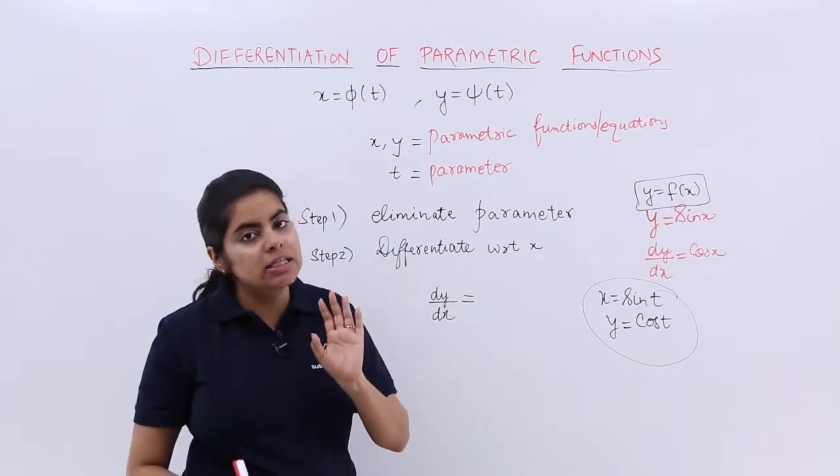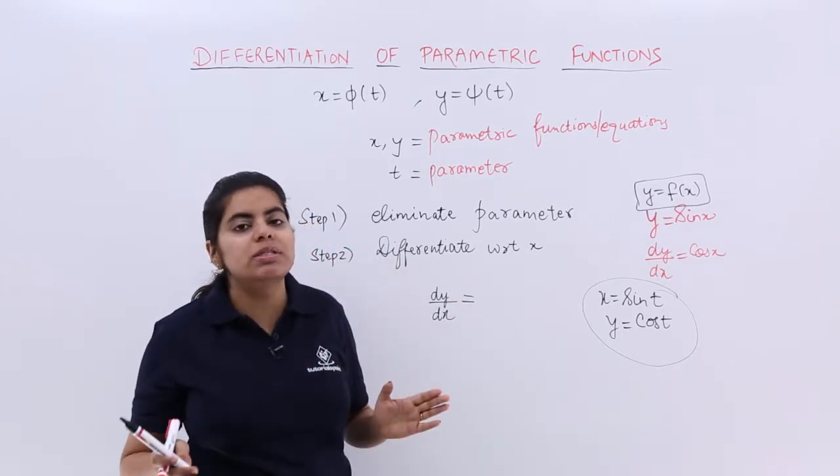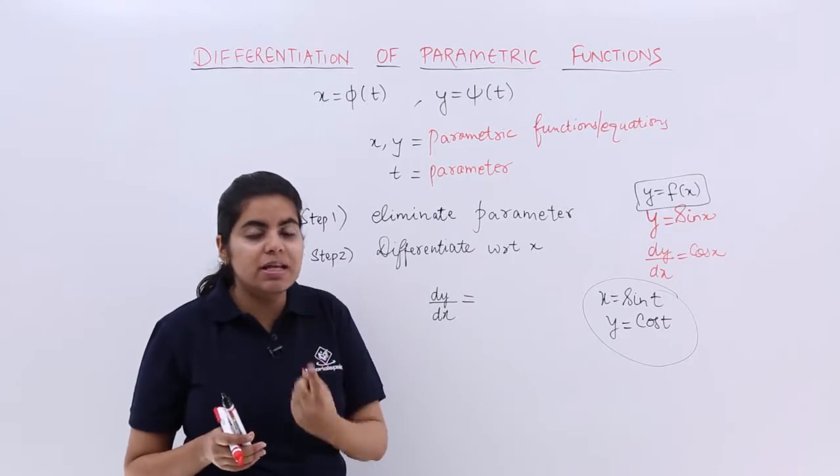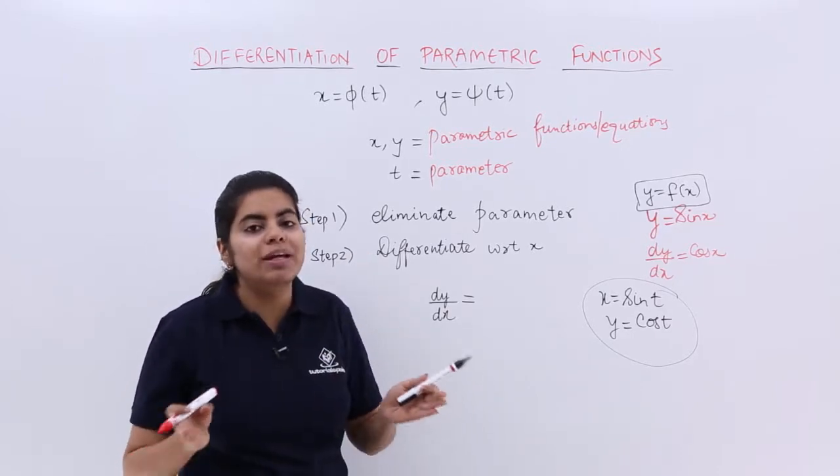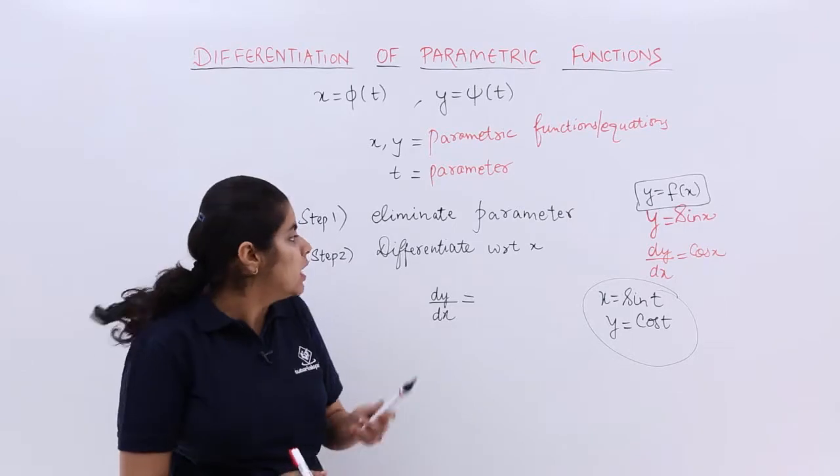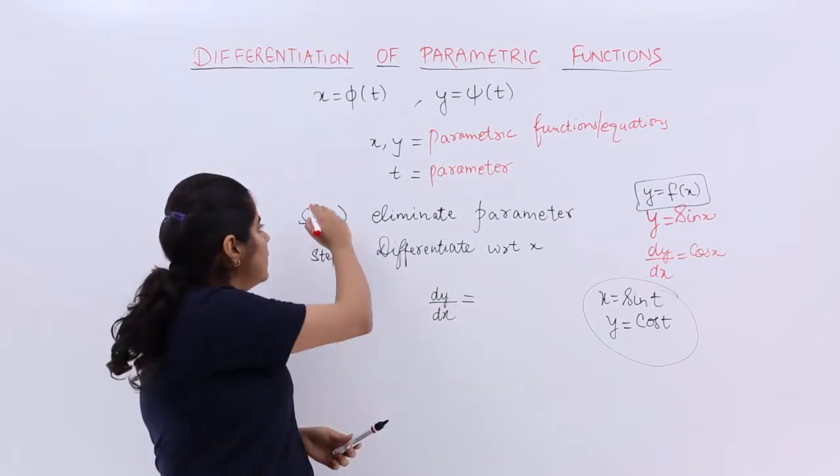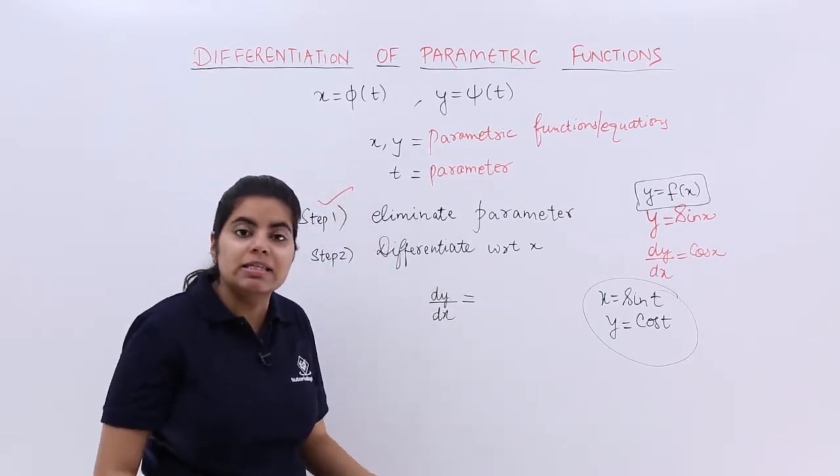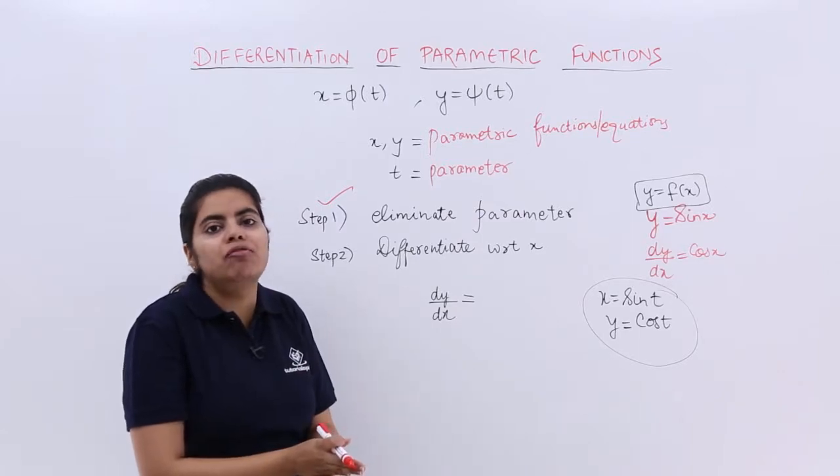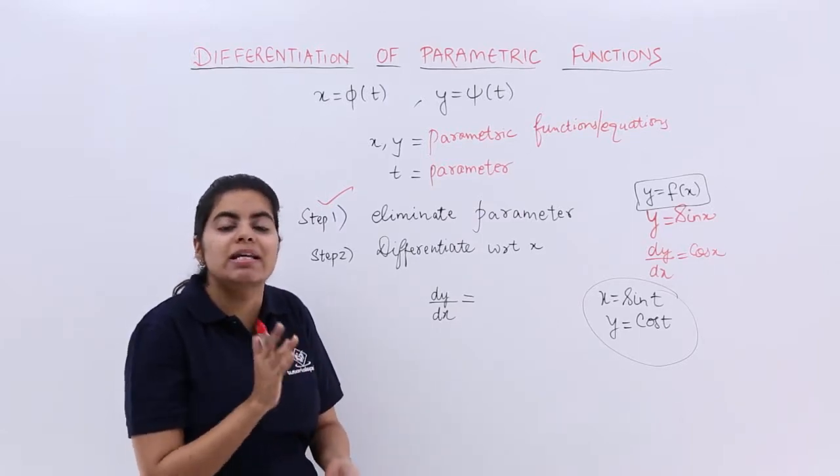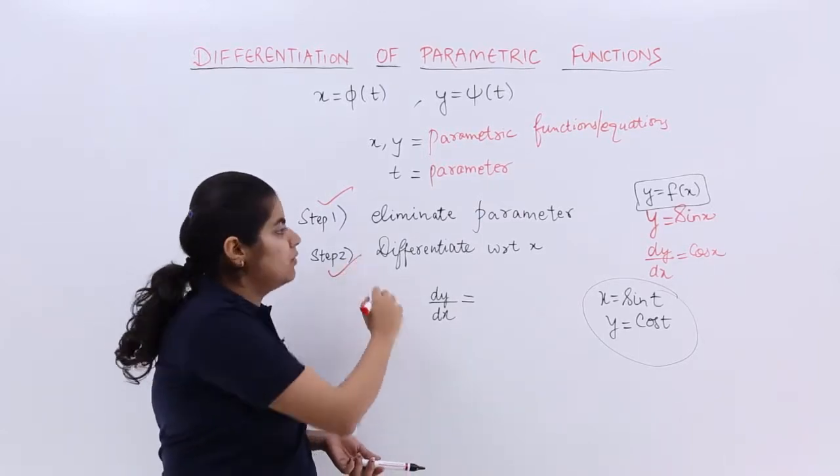So the criteria is involved and there are two steps for the same. The first step is you have to focus on removing or eliminating the parameter. The second step is then you have to differentiate with respect to x in order to find out dy by dx.